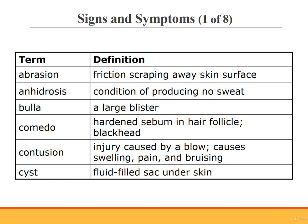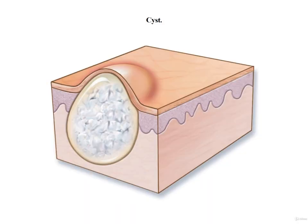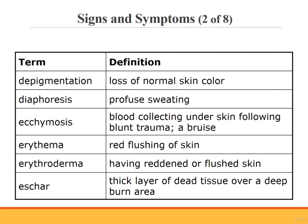A cyst is a fluid-filled sac under the skin. The difference between a cyst and an abscess is that the fluid in a cyst is not infected. Depigmentation is the loss of normal skin color, or pigment. Diaphoresis is profuse sweating — this is the kind of sweating you see when someone is having a heart attack. Ecchymosis is skin discoloration caused by blood collecting under the skin after blunt trauma; it's the medical term for a bruise. Erythema is redness or flushing of the skin. Erythroderma is the condition of having reddened or flushed skin.